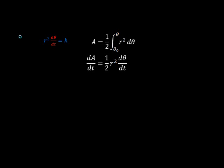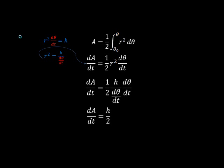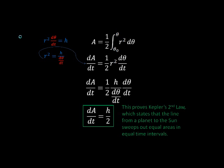Now we can sub in our formula that we had before. If we isolate for r squared dθ by dt to get h, we can sub this into our new equation, and we get a value of dA by dt equals h over 2. This proves Kepler's law, as we have just shown that the change in area with respect to time is a constant.